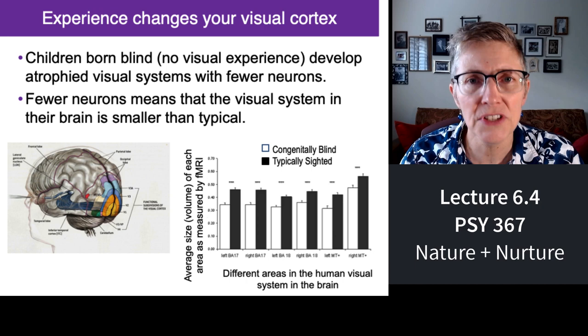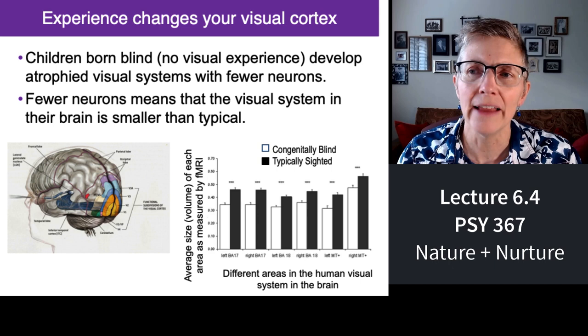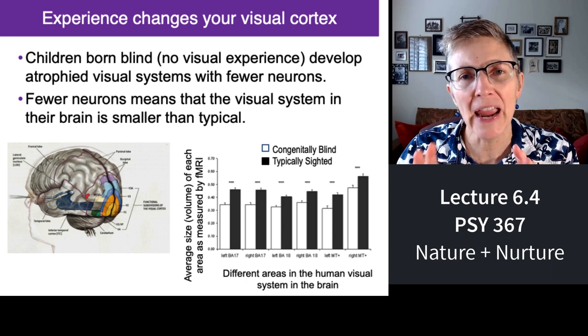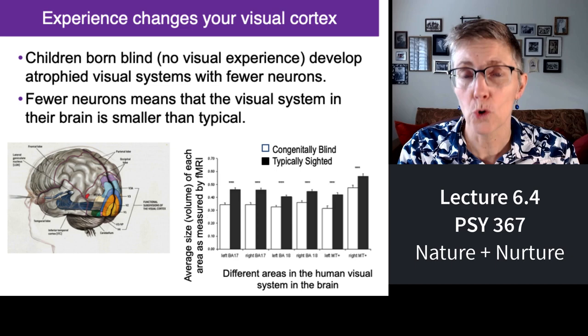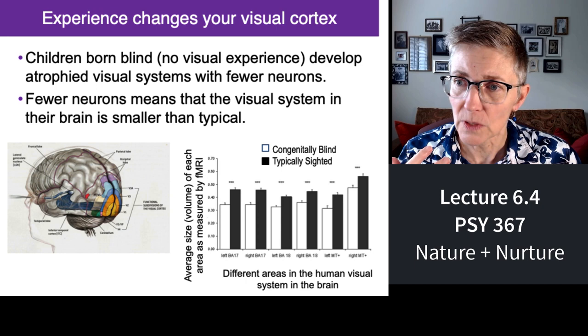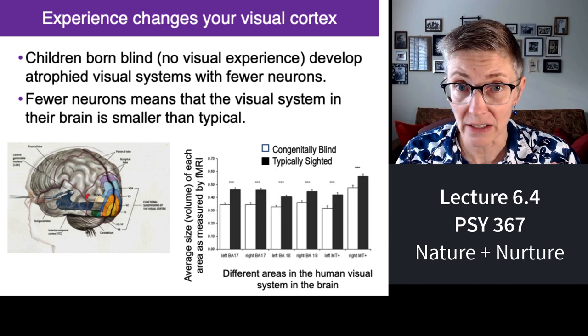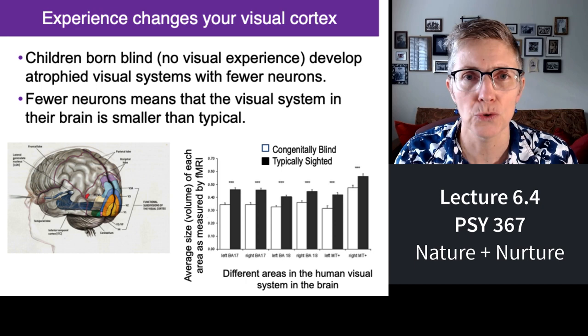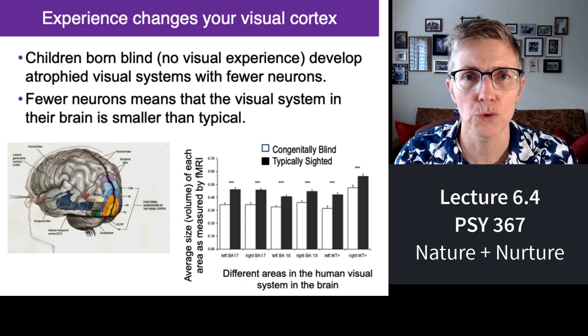A similar kind of study was done with humans — not about raising them in striped environments, but looking at children who were born blind. If you compare the visual cortex and all the visual areas in the occipital lobe in adults who were born sighted versus those born blind, it turns out that congenitally blind people — blind from birth — have a visual cortex, but the number of neurons in that visual cortex is reduced. They have a smaller visual system.